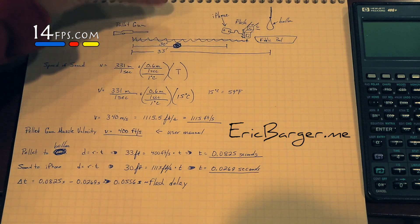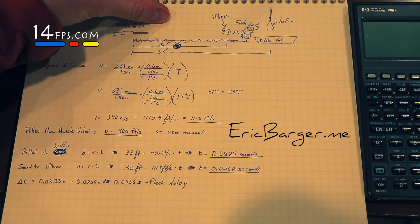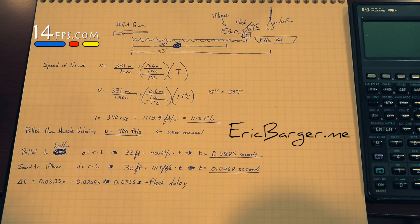Because when the transmitter fires, it fires via radio wave and radio waves move right at the speed of light. So it is near instant. That would be the one change I would have made to our setup. Hope you enjoyed the quick math lesson.